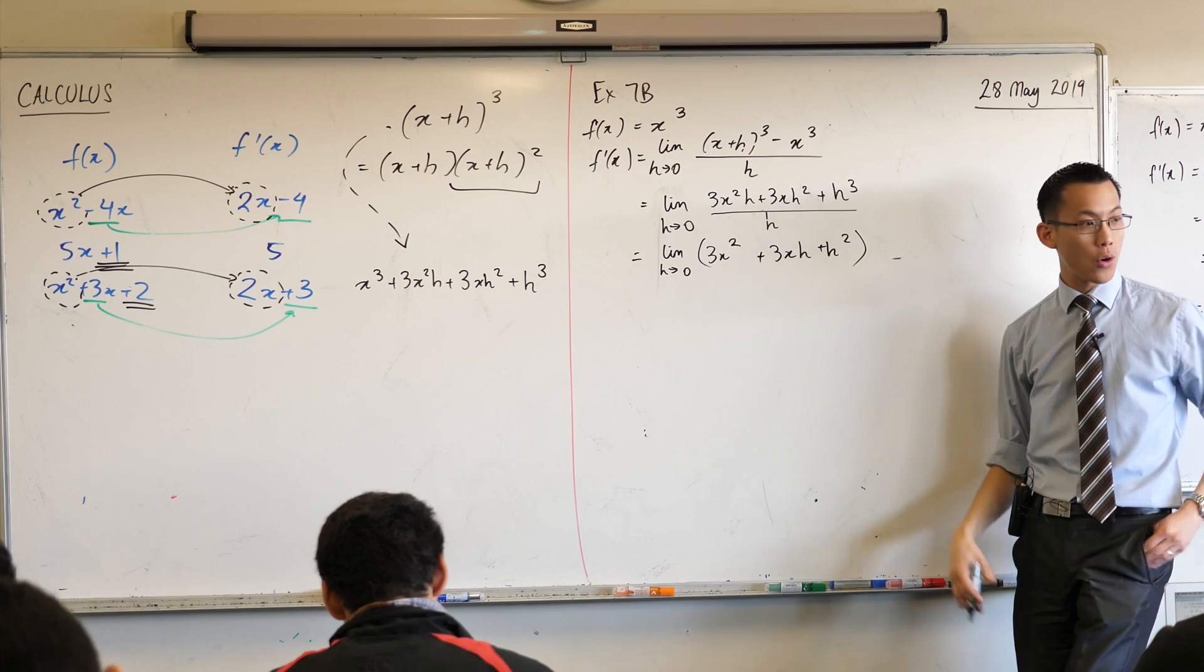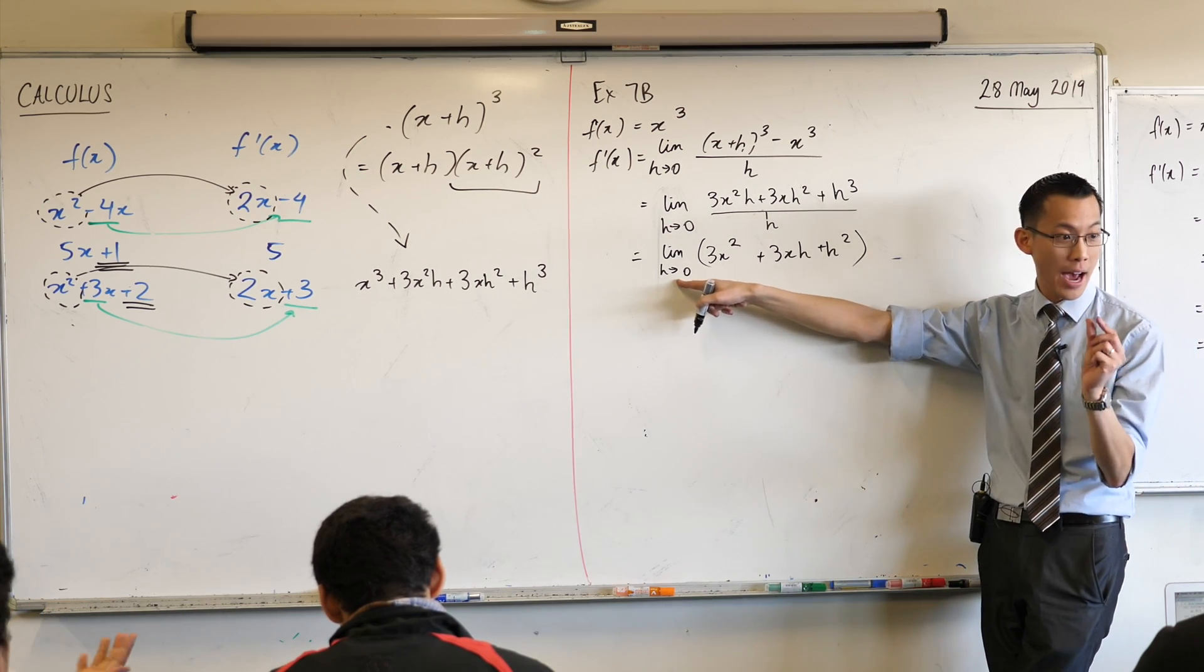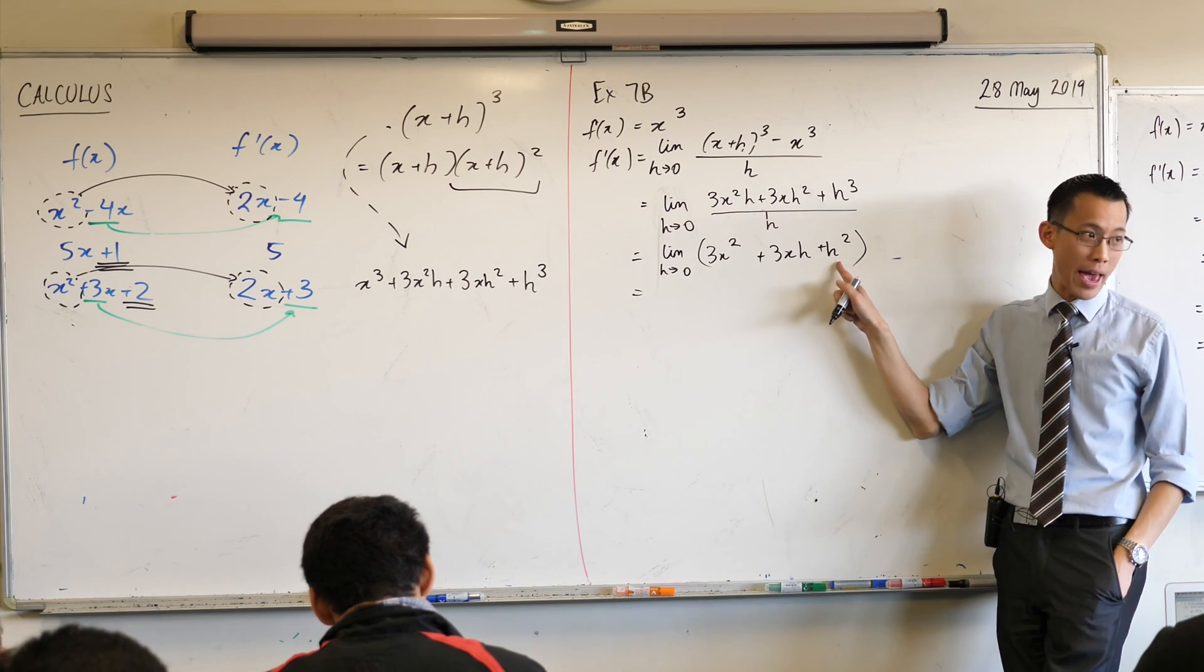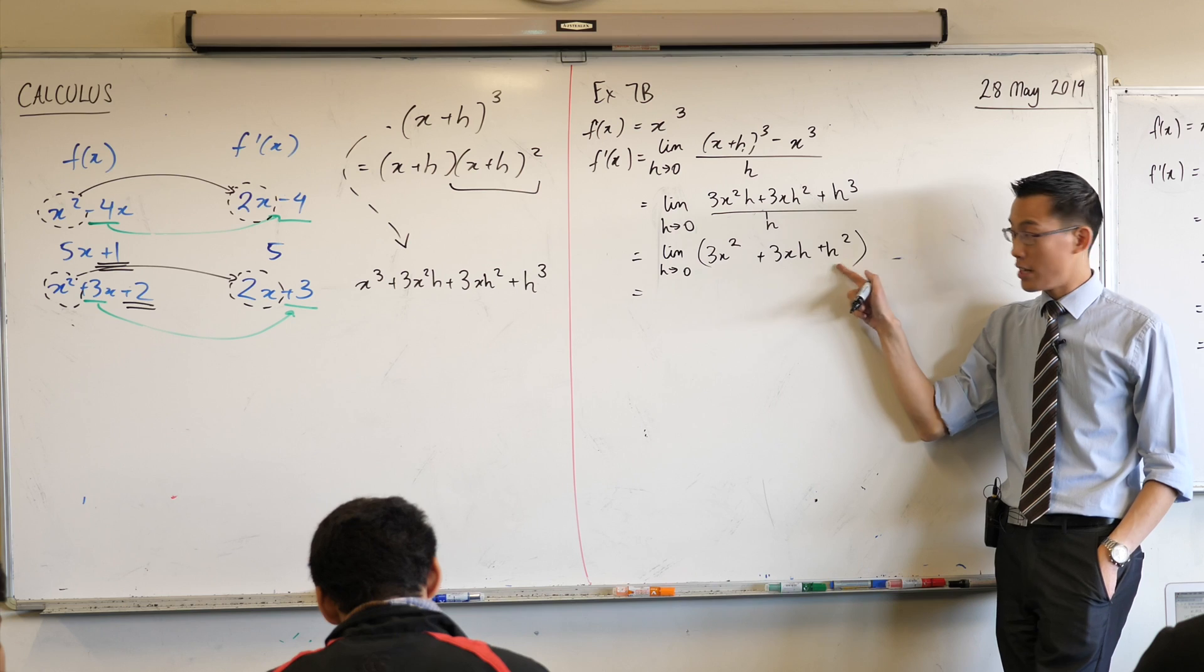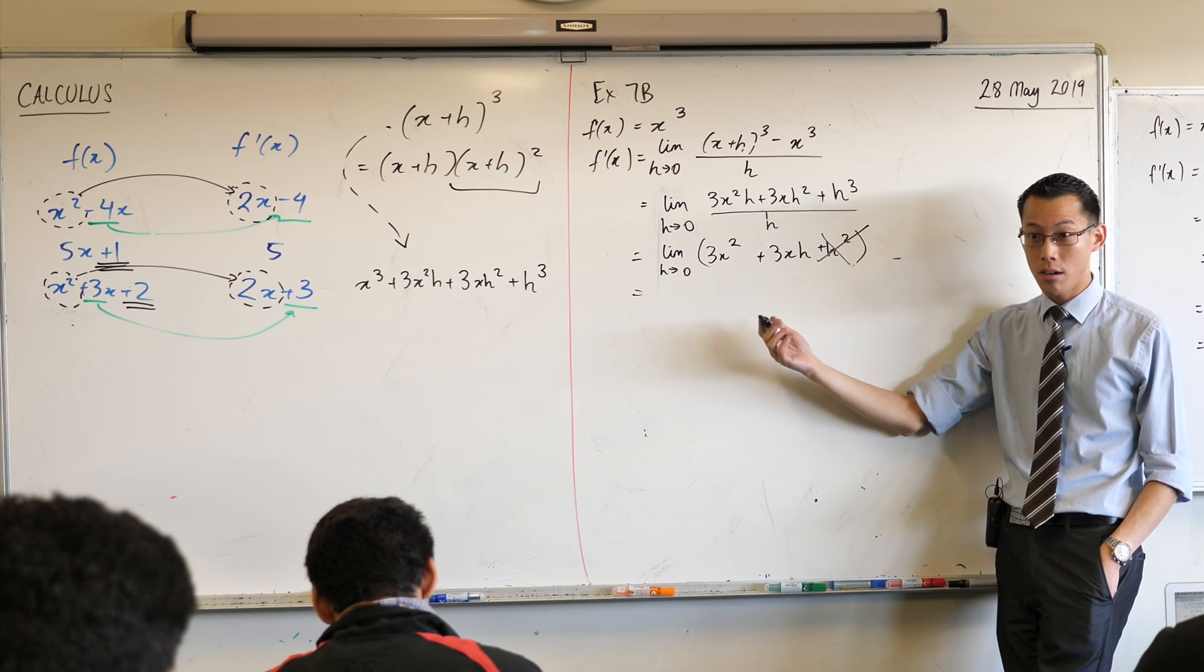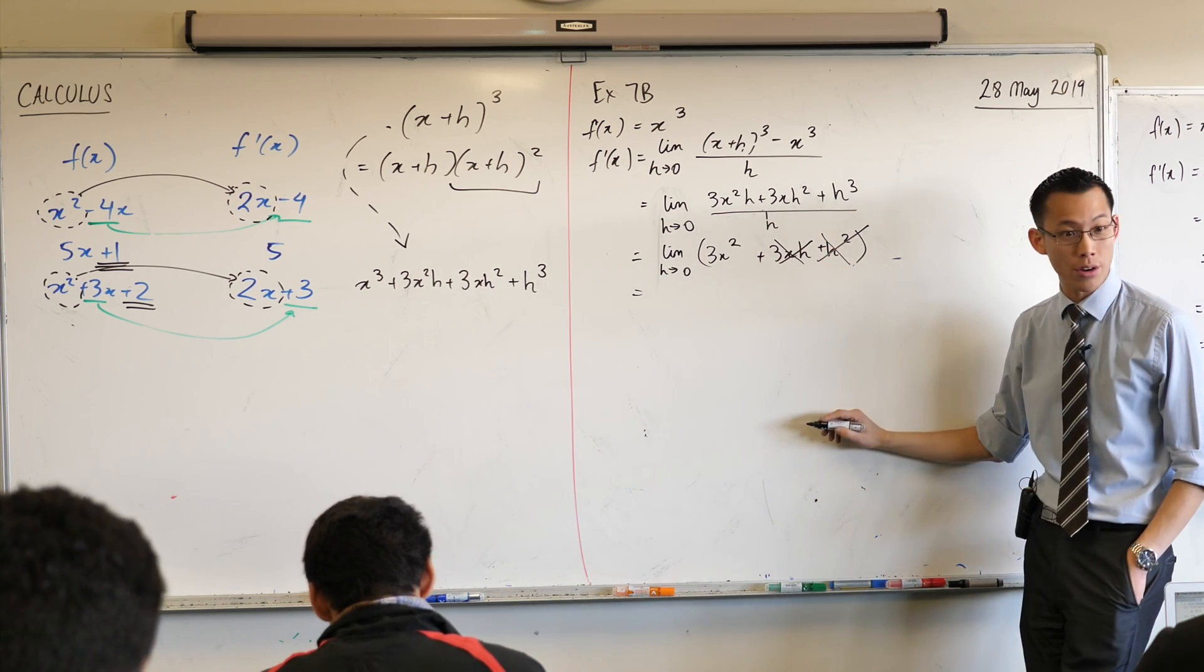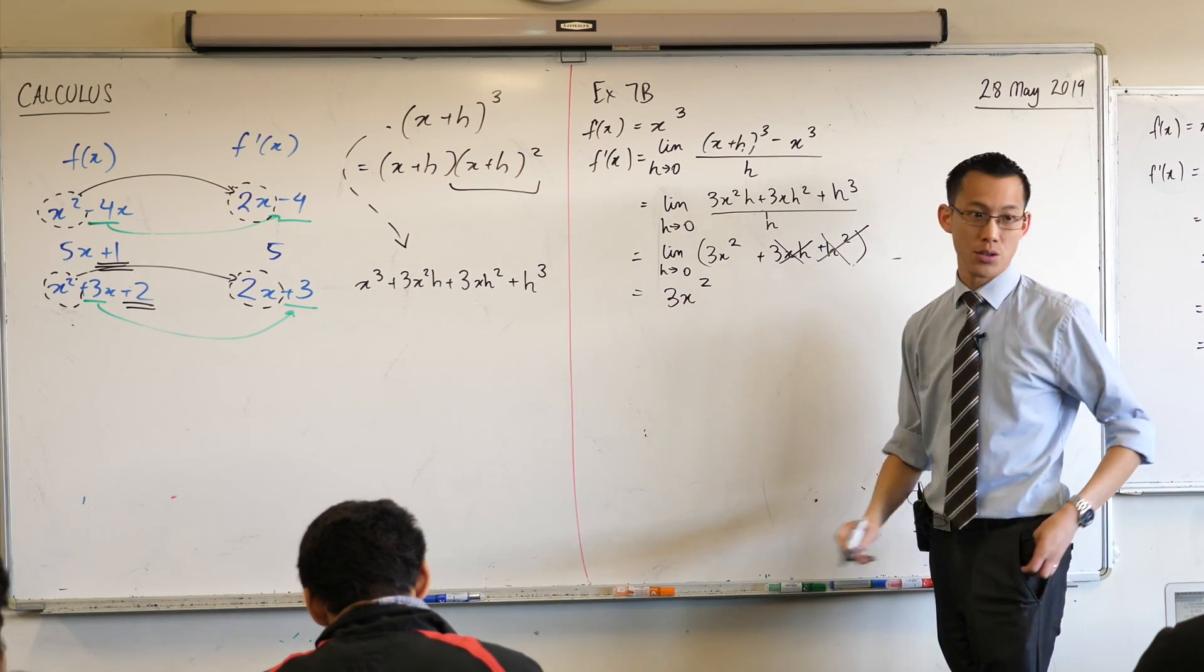All of that, we now want to consider this whole object when h gets really teeny tiny. If it gets to zero. Let's do the easy one first. What happens to h squared when h gets towards zero? Zero. This thing's just going to disappear, isn't it? Right? What about this guy? Zero. This will also, because zero times whatever is still going to give you zero, isn't it? So this guy's also going to go. So all you get left with is just 3x squared.